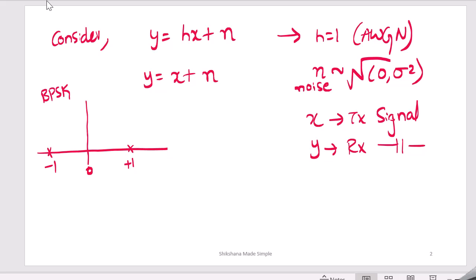In BPSK system we will consider that whenever we transmit plus 1 we transmit with certain power P. So power is equal to P, which means that if we are representing in the constellation then the amplitude will be square root of P, and this will be minus square root of P.